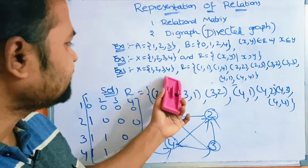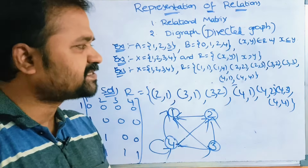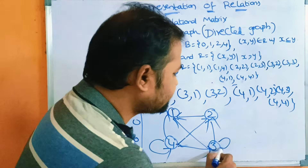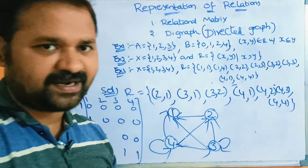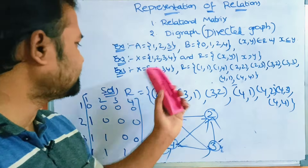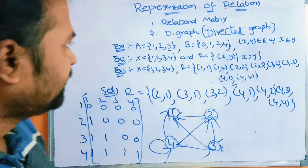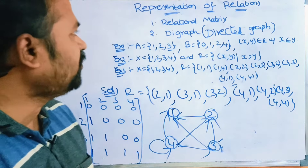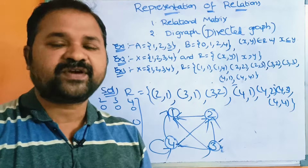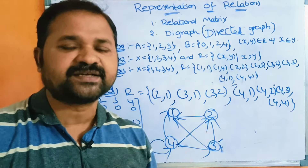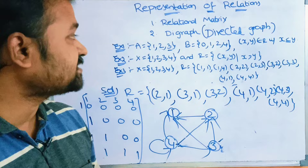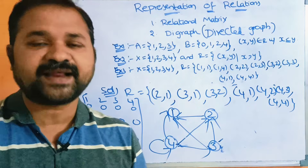Likewise in the third example, all the ordered pairs are given. Note that (3,3) means it is a loop. Please solve Example 3 on your own. This concludes the topic of representation of relations — we can represent relations using two approaches: matrix representation as well as graph representation.